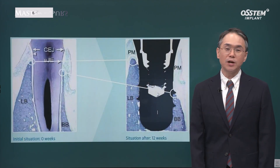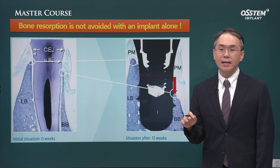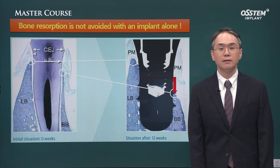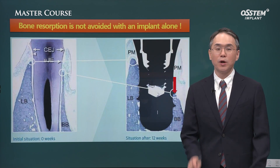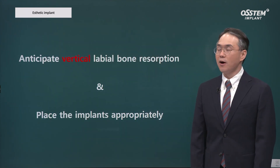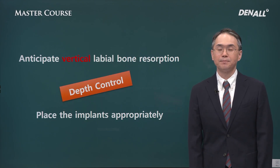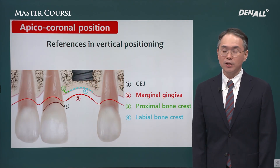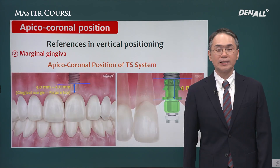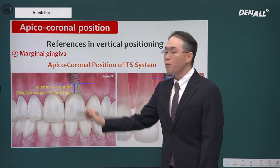Next is vertical position. Due to vertical resorption of the labial plate, when we place the implant we need to adjust the depth. When we place in a healed site, we need to place 1 mm deep sub-crestally, but when placing in an extraction socket, there is no reference point. Lingual bone and buccal bone height will be different, and we need to anticipate vertical resorption of labial bone. In the case of an upper anterior extraction socket, you need to anticipate the vertical resorption of labial bone and adjust the depth accordingly. There are reference points used for depth control, and you need to consider marginal gingiva — this is most important. From marginal gingiva to implant top, the distance should be 4 to 5 mm.